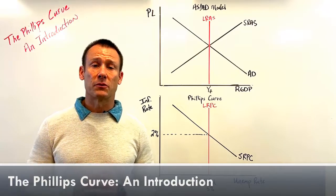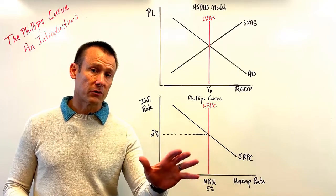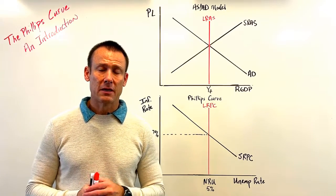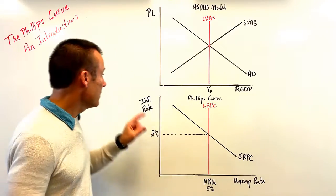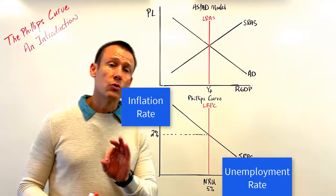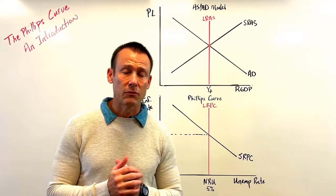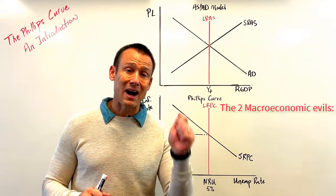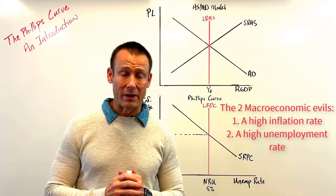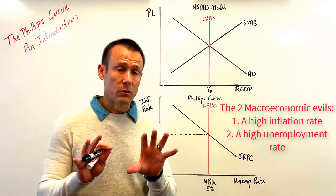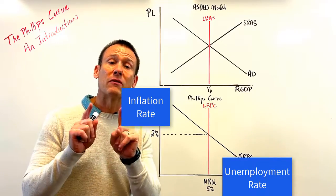Hey everybody, this is an introduction to the Phillips Curve — we're going to cover all of the basics. When you encounter the Phillips Curve, you're probably in the latter part of your macroeconomics class. At that point you're ready to think about the relationship between the inflation rate and the unemployment rate — two things we care a ton about. There are two macroeconomic evils: a high inflation rate and a high unemployment rate, and we want to avoid both.